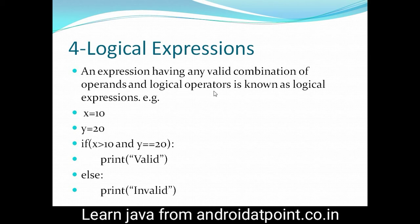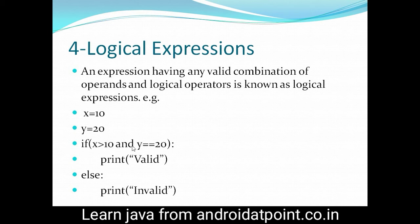Now the next is the logical expression. An expression having any valid combination of operands and logical operators is known as a logical expression. Taking a simple example: assign the value 10 to x variable, 20 to y variable. Write here: if x greater than 10 and y equals to 20 — if the condition is true then print 'valid', else print 'invalid'. You well know the logical operators: and, or, not are the logical operators. In this expression I have used the logical operator 'and', and this is also a relational expression, so this is a combination of logical and relational — we can say this is also the compound expression.